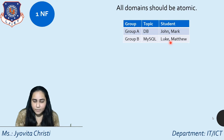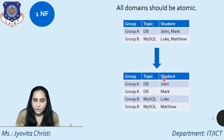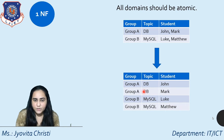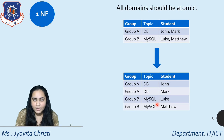To remedy this, we convert the table with two rows into a table with four rows, so John, Mark, Luke, and Matthew each appear separately in their own row. You'll notice some duplication — group A appears twice, group B appears twice, and DB and MySQL each appear twice — but that's acceptable for now. This is our first step in the normalization process.